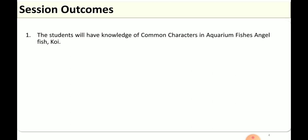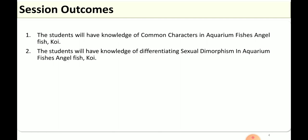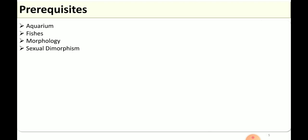The outcomes of this session are: you will understand the different characteristics so that you can differentiate the two types of fishes, and you will gain wide knowledge about dimorphism — how males and females are differentiated. Some prerequisites for this session include prior knowledge of aquariums, what fishes are, their morphology, and dimorphism. So let's begin.